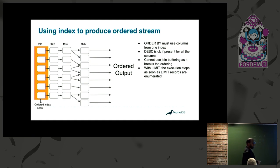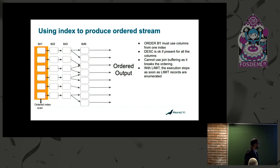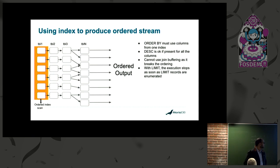If you have a descending clause in the ORDER BY clause, you have to make sure that descending applies to all key parts of the index mentioned. Also, with this approach you can shortcut the join execution — you do not need to compute the entire join. You can stop as soon as you get the number of records mentioned in the LIMIT.